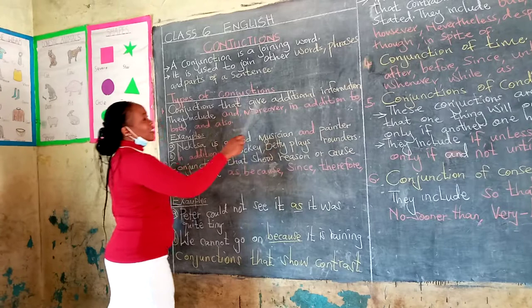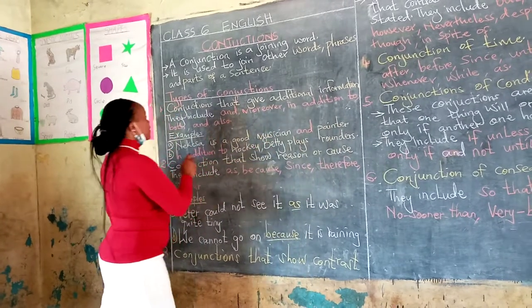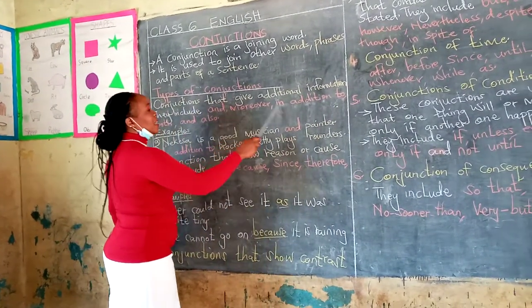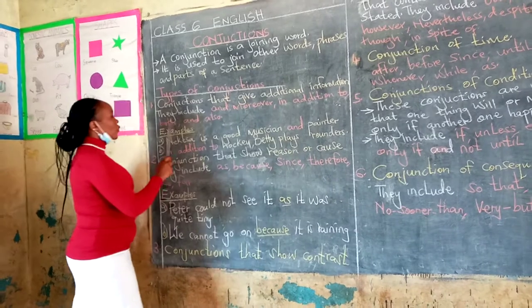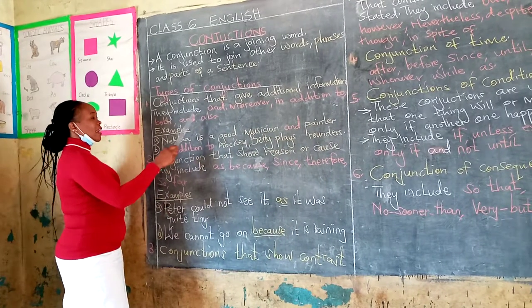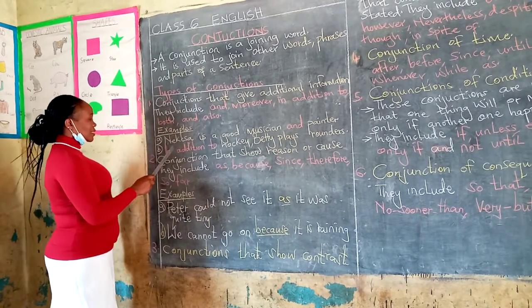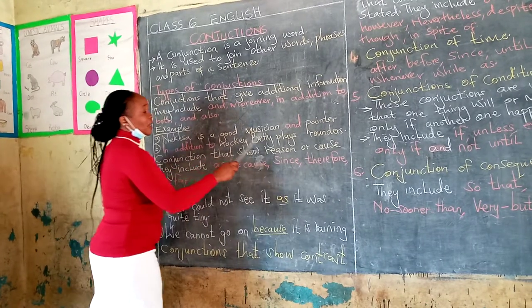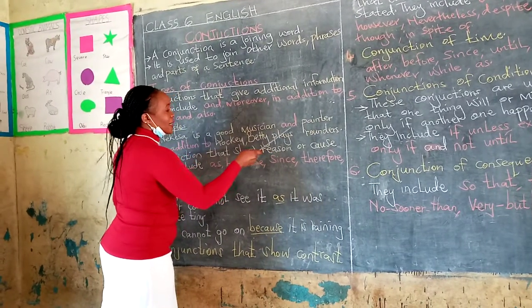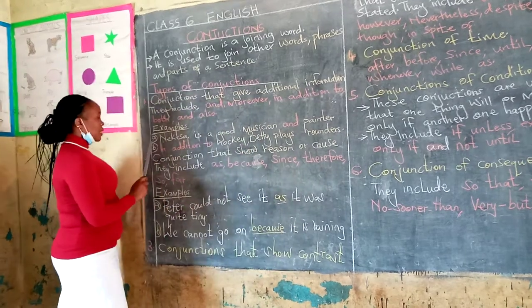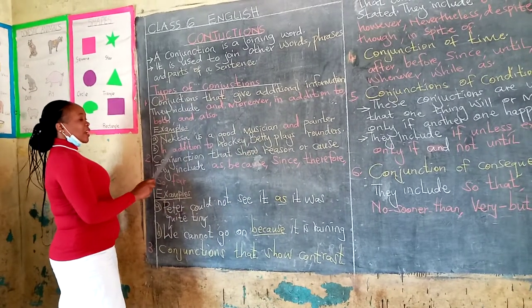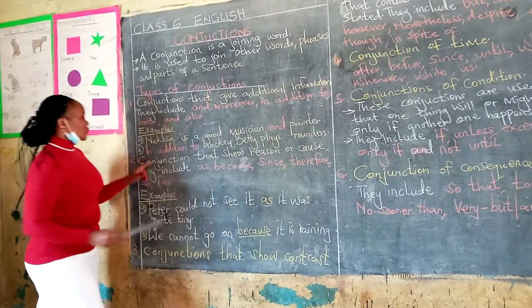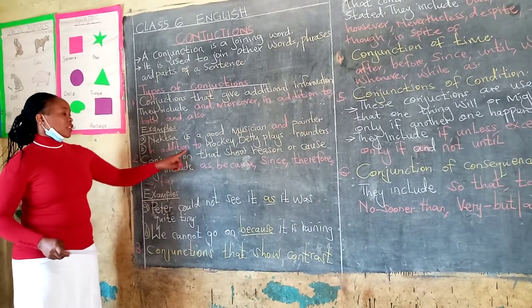Conjunctions that give additional information. These ones include: and, moreover, in addition to, both, and also. Let's see the examples. Nekesa is a good musician and a tinker — so the word 'and' is a conjunction. In addition to hockey, Betty plays rounders — so 'in addition to' is the conjunction there.